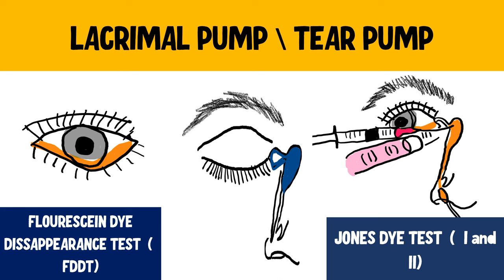Hello and welcome to Insight of Thermology. This is Dr. Amrit welcoming you to another lecture. Today we are studying the lacrimal pump and tear pump mechanism. Along with that we shall be studying about two important tests: the fluorescent dye disappearance test and the Jones dye test 1 and 2.